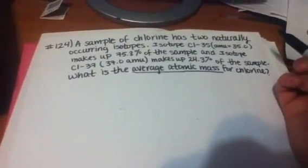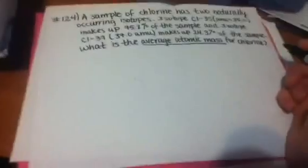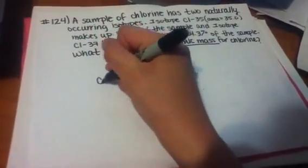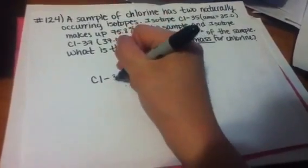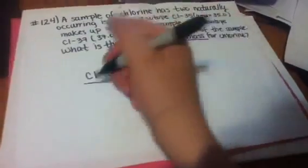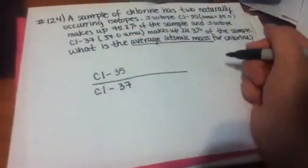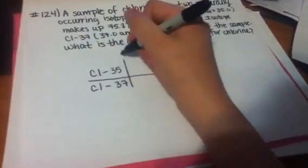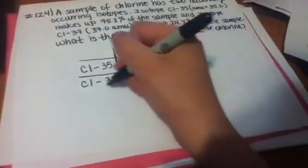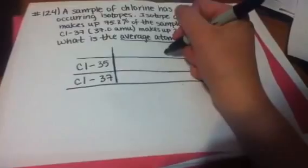Because we're given two different isotopes, what we need to do is make ourselves a little chart which will help us. So here, I'm going to put our isotope, which is Cl-35 and Cl-37. These are our isotopes. And over here, making a little chart here so that it's easier for us...